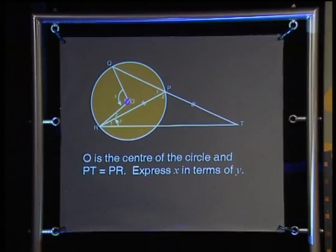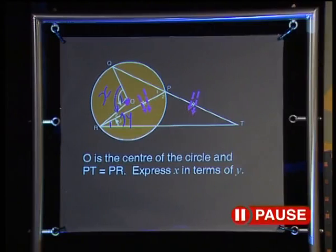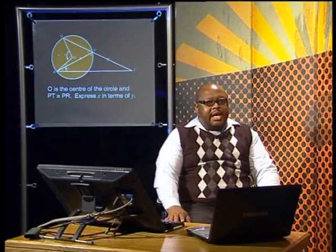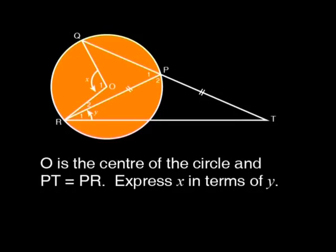In this diagram, O is the center of the circle and PT equals PR. Angle R1 is labeled Y and angle O1 is labeled X. The question is: express X in terms of Y. Have a look at X and Y — can you see any immediate link? The best approach is to fill in whatever information you can on the diagram. Start by checking for equal radii: OQ equals OR, equal radii. And triangle PRT is isosceles, so angle Y equals angle T.